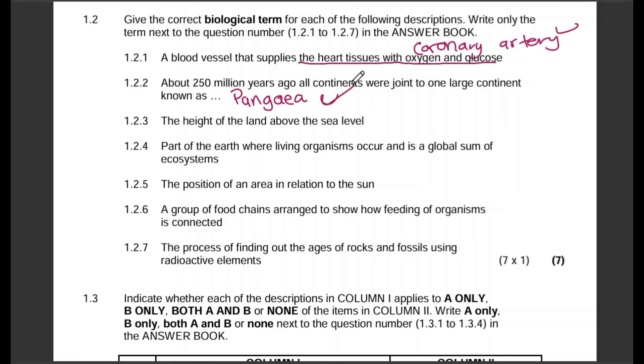Question 1.2.3: The height of the land above sea level is altitude. Question 1.2.4: Part of the earth where living organisms occur and is the global sum of ecosystems is the biosphere. Question 1.2.5: The position of an area in relation to the sun, that's the aspect.